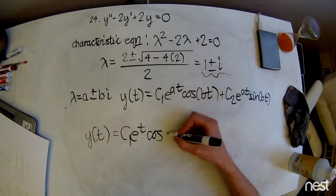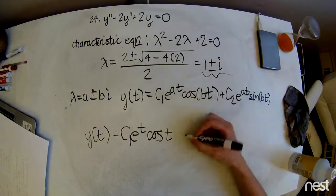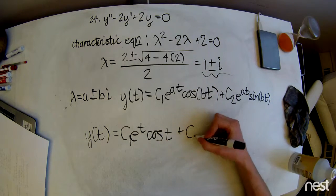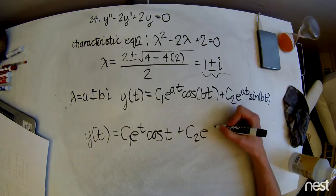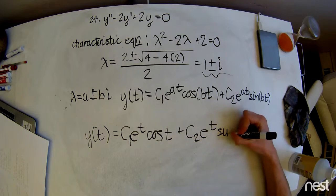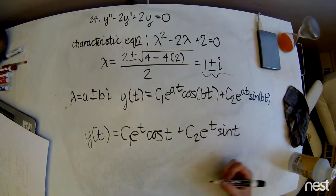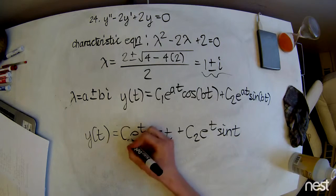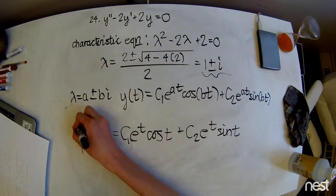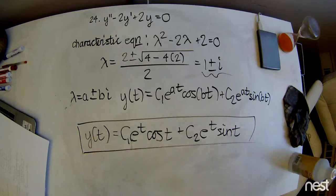Cosine of, again, just one, so t, plus c2 e to the t sine of t. And that is our solution.